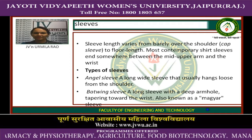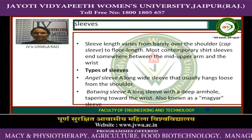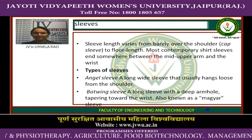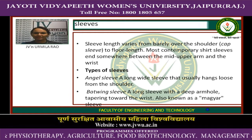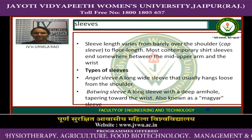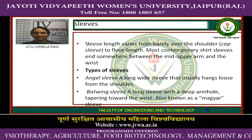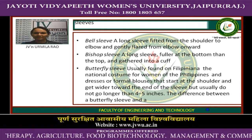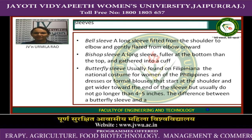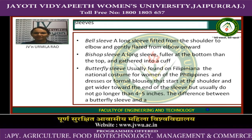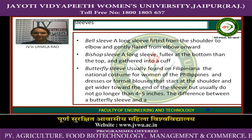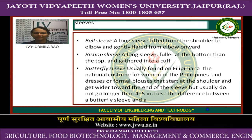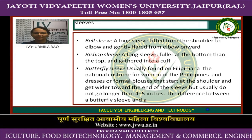Types of sleeve. First, the angel sleeve: a long wide sleeve that usually hangs loose from the shoulder. The batwing sleeve: a long sleeve with a deep armhole tapering toward the wrist, also known as a Magyar sleeve. Bell sleeve: a long sleeve fitted from the shoulder to elbow and gently flared from the elbow onward. Bishop sleeve: a long sleeve fuller at the bottom than the top and gathered into a cuff.